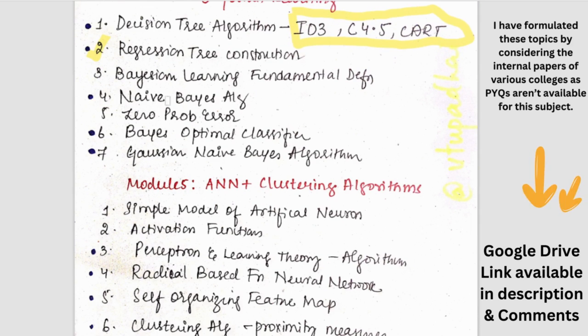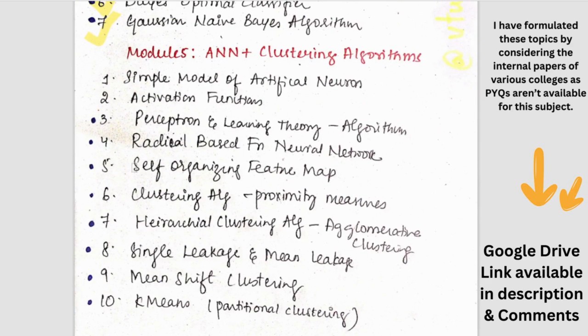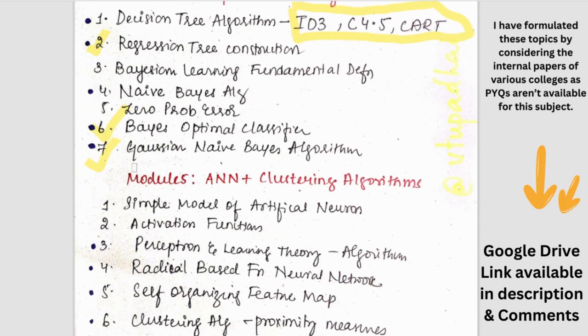Then we have Bayesian learning fundamental definition and then Naive Bayes algorithm, zero probability error. Zero probability error is extension of Naive Bayes algorithm. Then we have Bayes optimal classifier and Gaussian Naive Bayes algorithm. So again we can expect problems and algorithm on these. They will ask us to define the algorithm and then solve a particular question. It will be given.